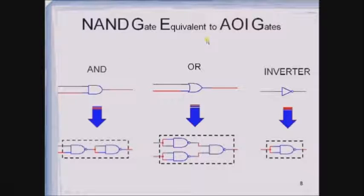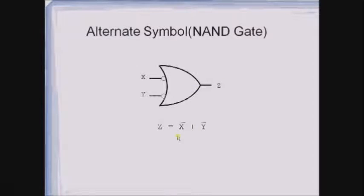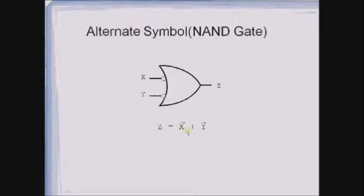So NAND gate equivalent to AOI gates: the AND gate is represented like this, the OR gate is represented like this, and the inverter is represented like this. This is the alternate symbol of the NAND gate, which receives two inverted inputs, giving X bar plus Y bar.